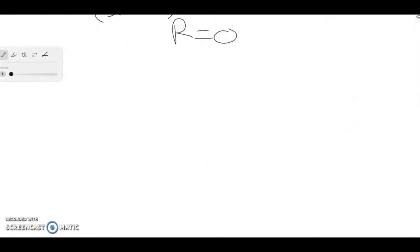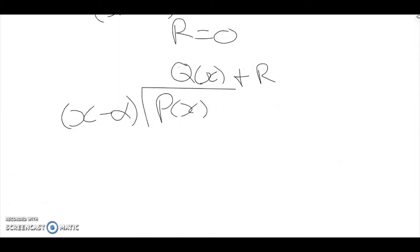And the remainder theorem basically states that if you divide a polynomial by something that might look like a factor, we will get our quotient plus the remainder.